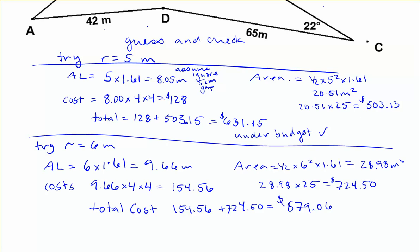we see that we get $879 and $0.06. And that's too much. So it's not going to work. That's not going to be a solution that works, because it's over 850.